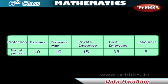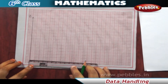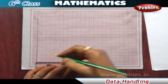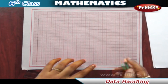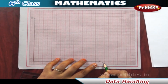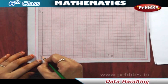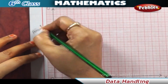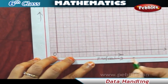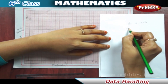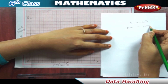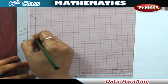To construct a vertical bar diagram, first draw two perpendicular lines: a horizontal line called the x-axis and a vertical line called the y-axis. Along the y-axis mark the number of people, and along the x-axis mark the professions. Then select a suitable scale — for example, one centimeter equals five persons.